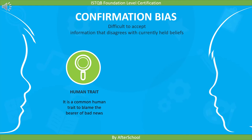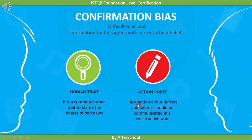So how do you handle this kind of situation between the tester and the developer? The action point is: information about defects and failures should be communicated in a constructive way. Whenever the tester finds a defect and has to tell the developer, he has to find a constructive way to communicate. He shouldn't criticize the developer, but stick to explaining what the real problem is.